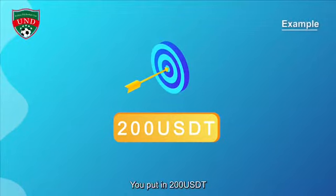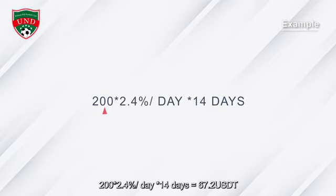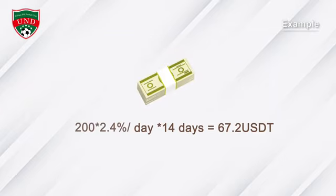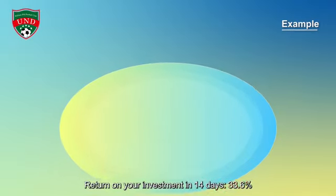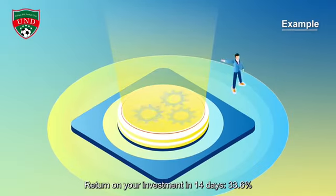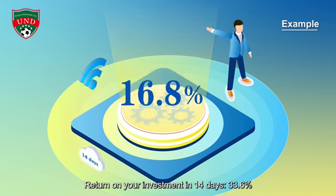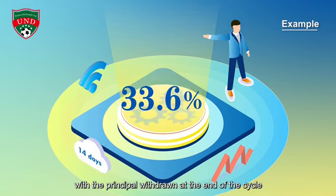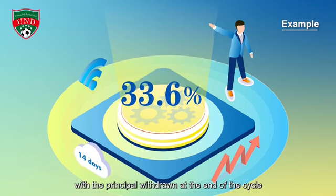For example, you put in 200 USDT: 200 USDT × 2.4% per day × 14 days = 67.2 USDT return on your investment in 14 days, which is 33.6%, with the principal withdrawn at the end of the cycle.